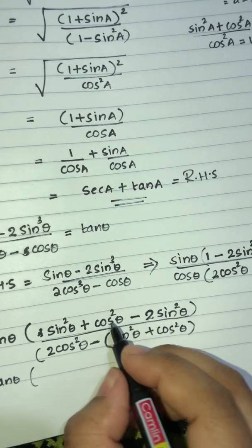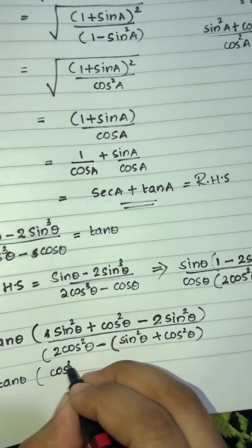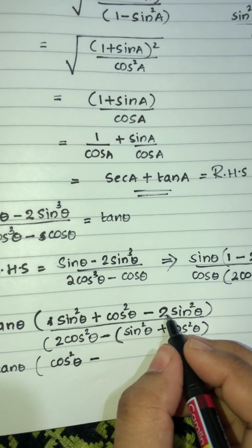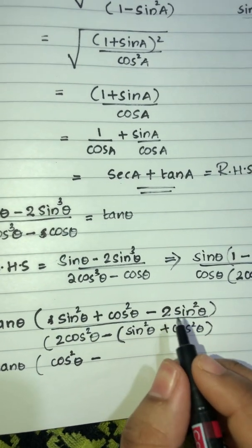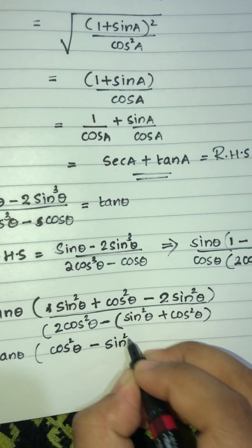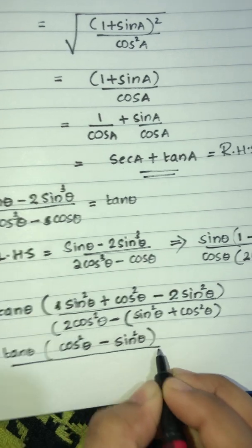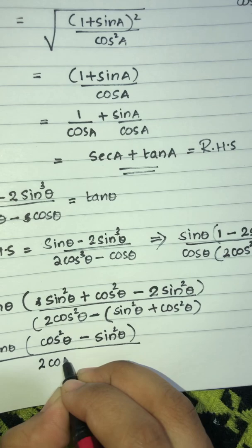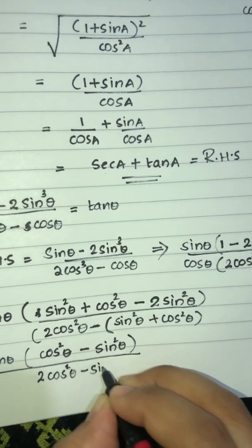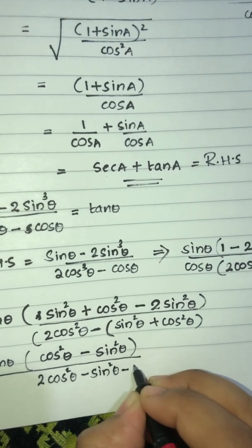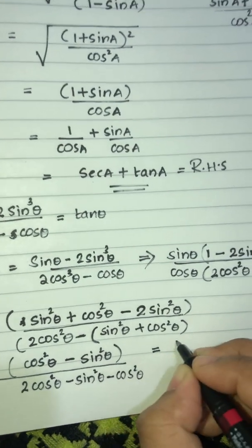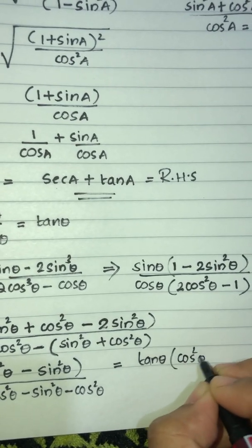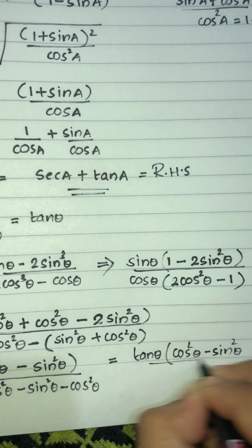The numerator simplifies: sin squared theta minus 2 sin squared theta gives minus sin squared theta, but applying the identity gives cos squared theta minus sin squared theta in the numerator. The denominator becomes 2 cos squared theta minus (sin squared theta plus cos squared theta), giving cos squared theta minus sin squared theta.